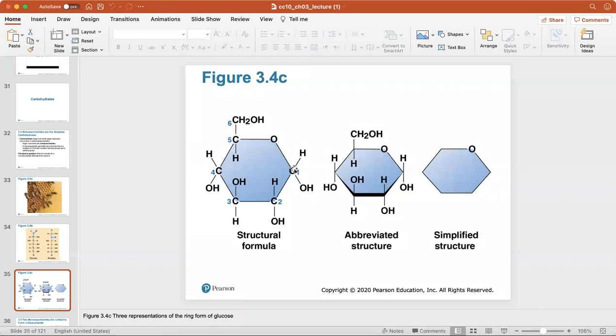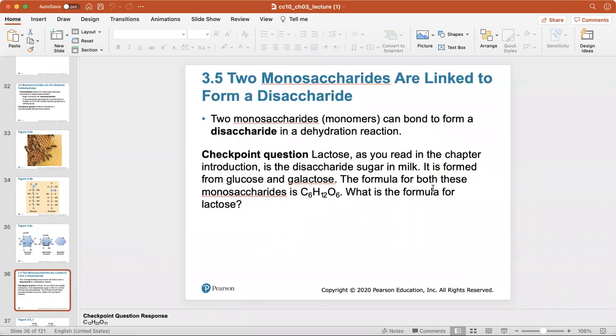Here are three representations of the ring form of glucose. They all mean the same thing but show different atoms highlighted. The structural formula gives all of the atoms in glucose. Here's an abbreviated formula, and then a simplified formula shows just the hexagonal ring.